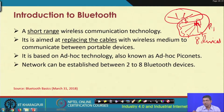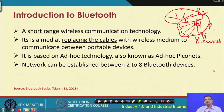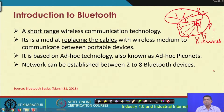Multiple Piconets interconnected together form something known as a scatter net. Within a Piconet, the network can be established between two to eight Bluetooth devices — that is, one master and one to seven slave devices.